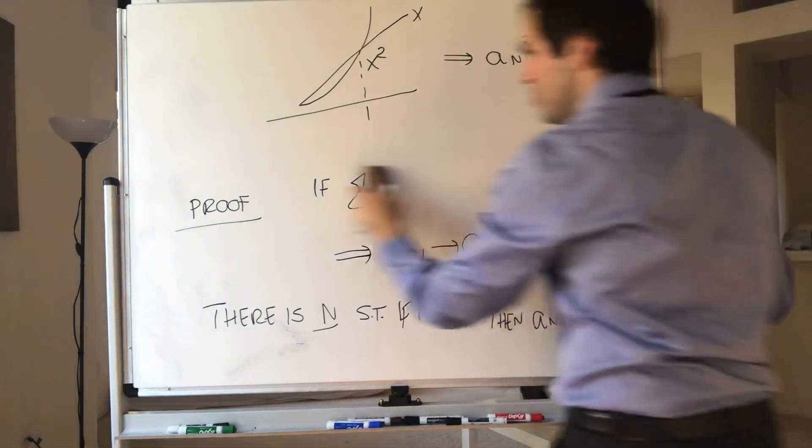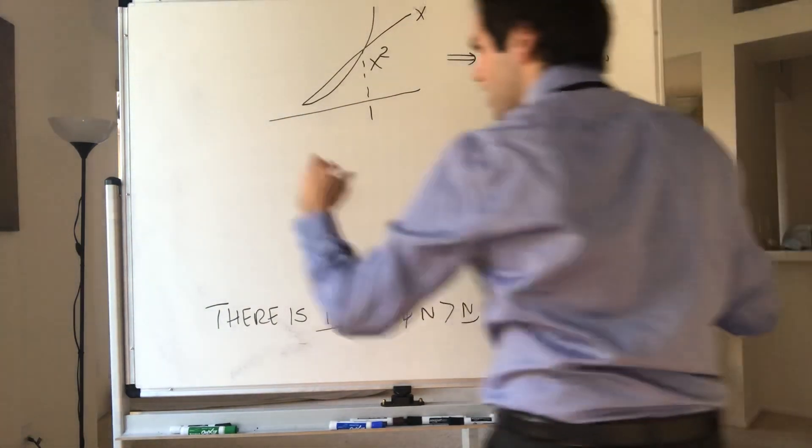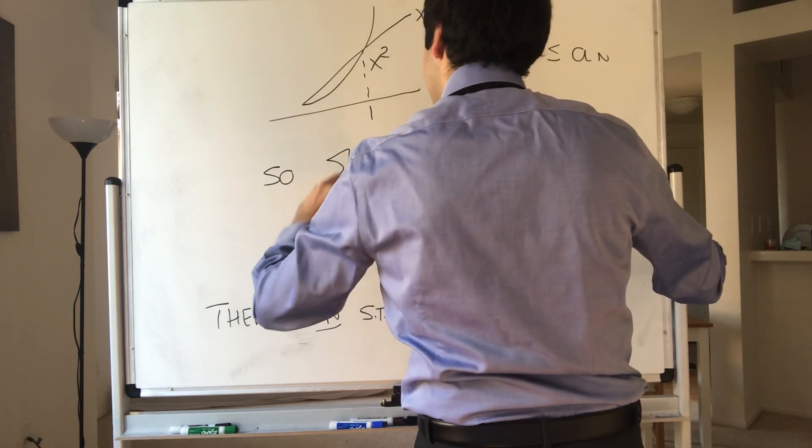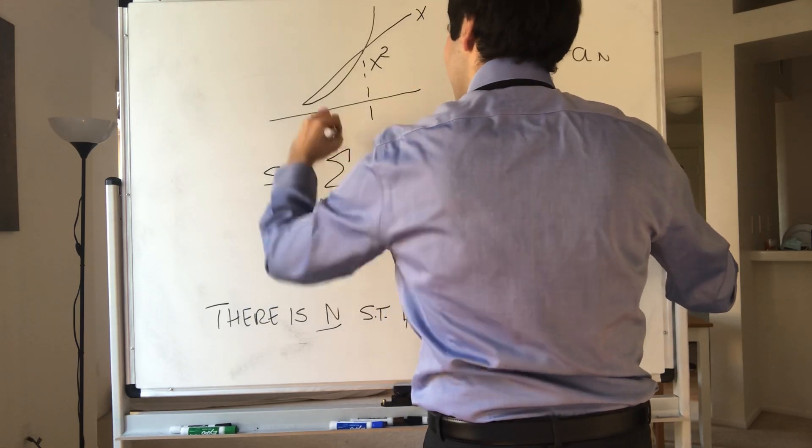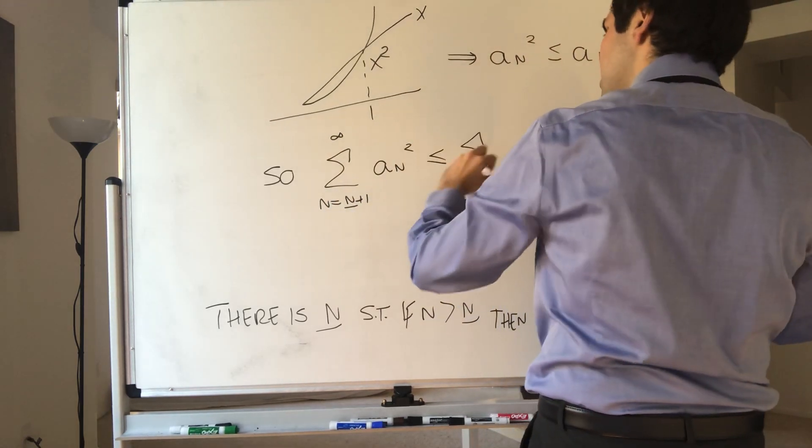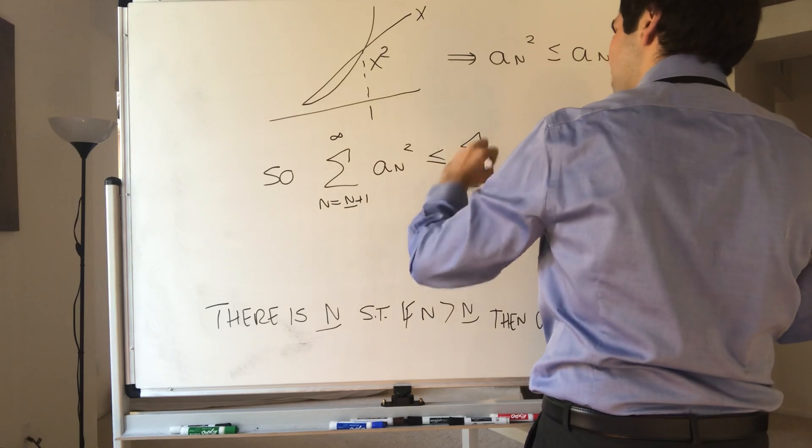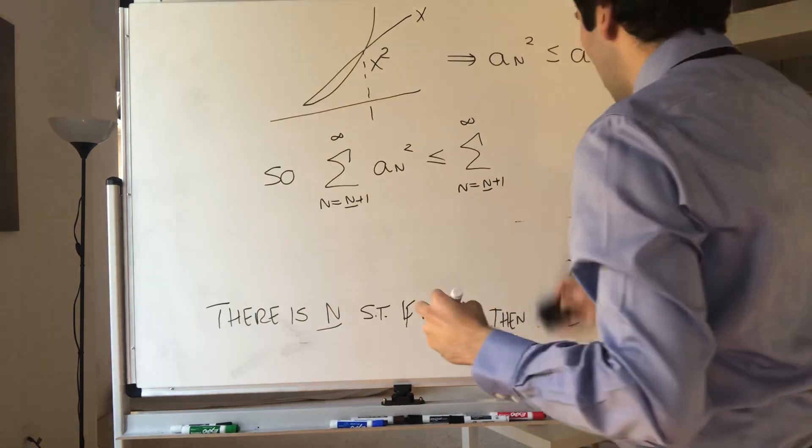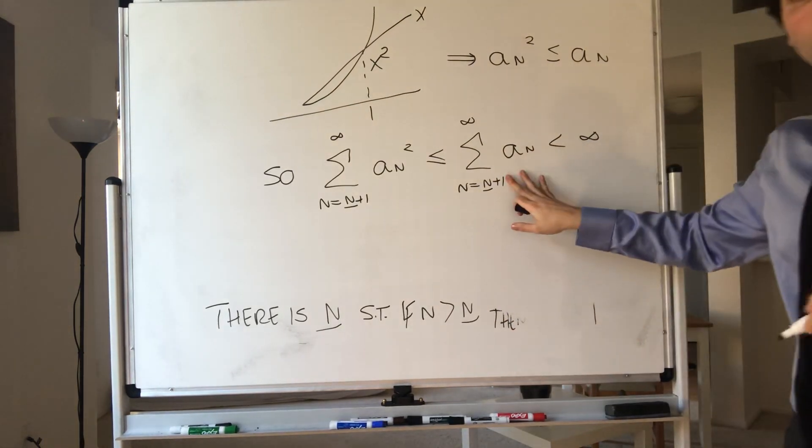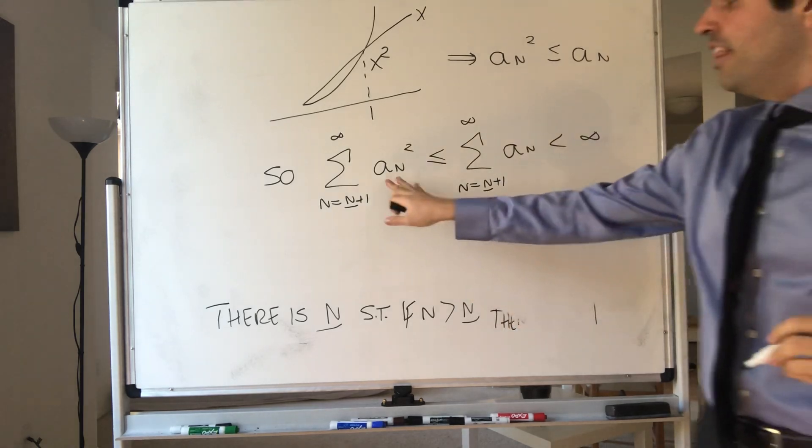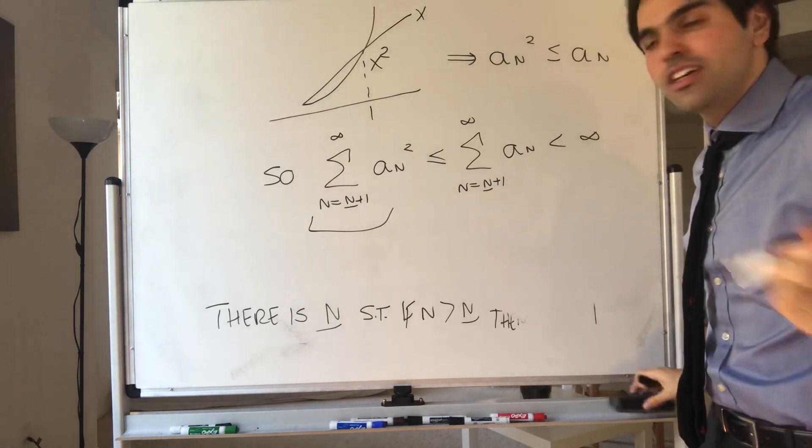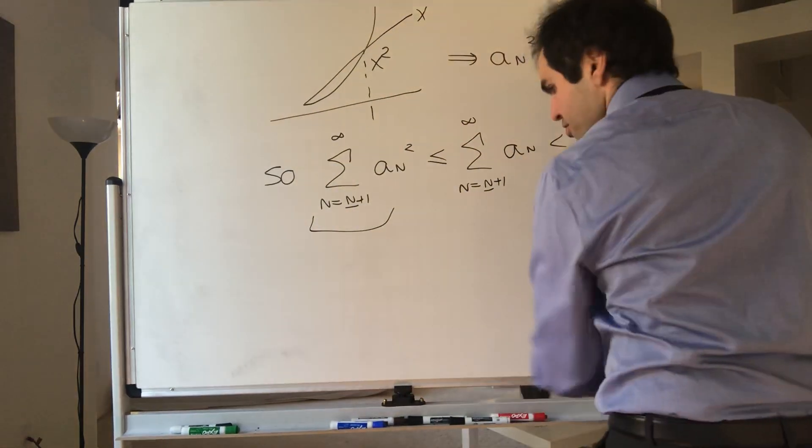And therefore, what can you tell me? Well, if you take this series starting at capital N, so the series from n equals capital N plus one to infinity of aₙ squared, that's less than or equal to the series from n equals capital N plus one to infinity of aₙ. Well, we know this converges by assumption, and therefore, we get that the tail of the series converges, so the whole series converges.